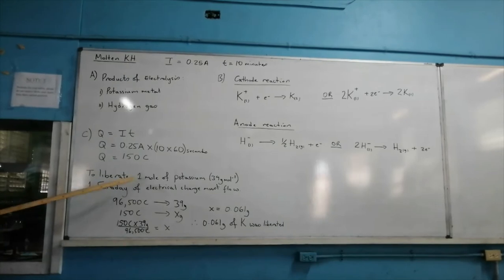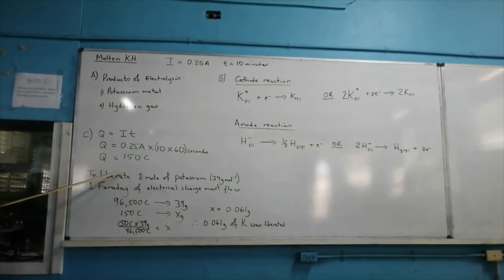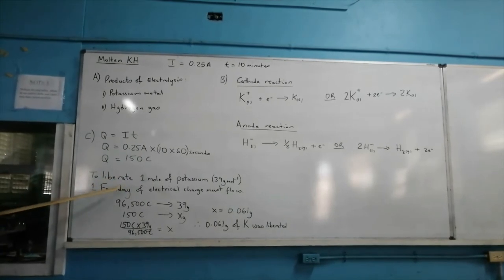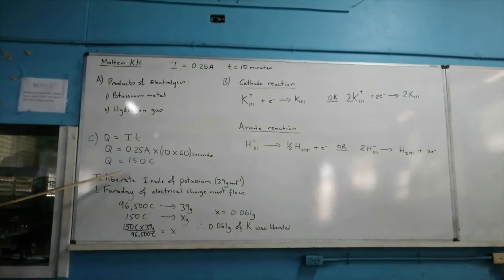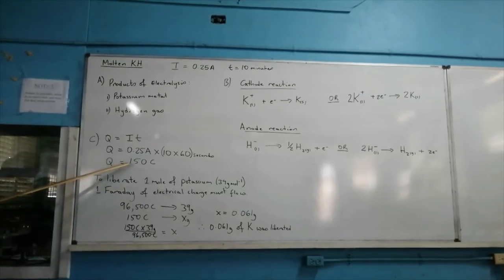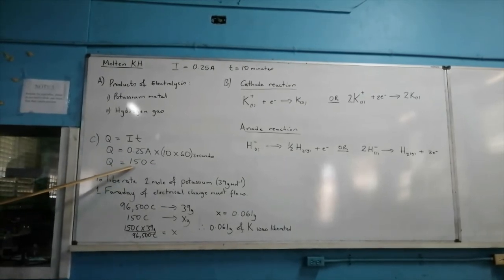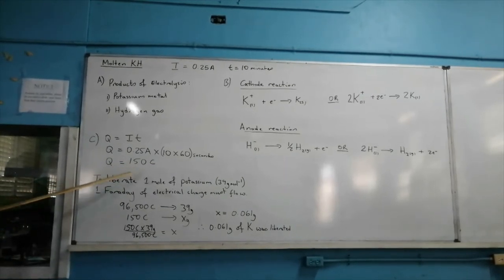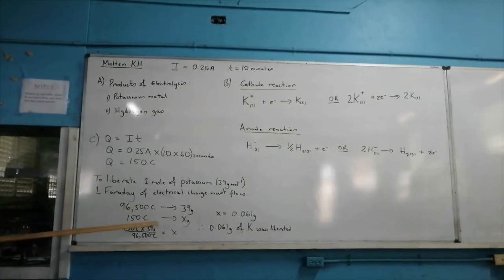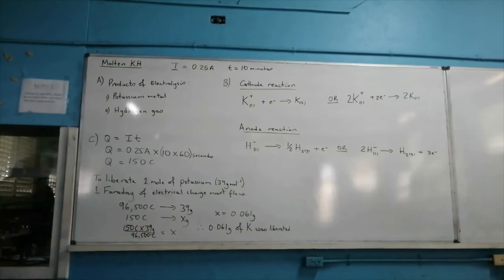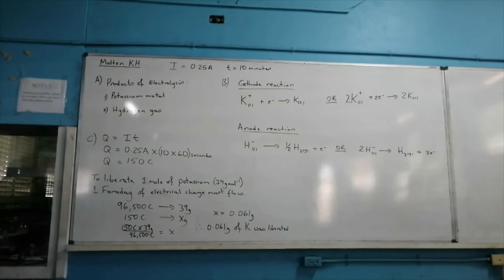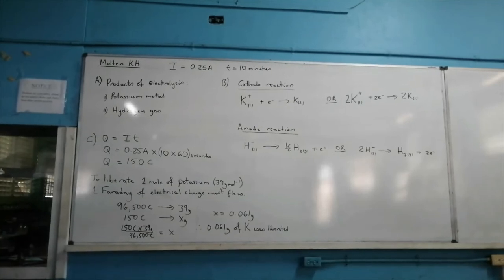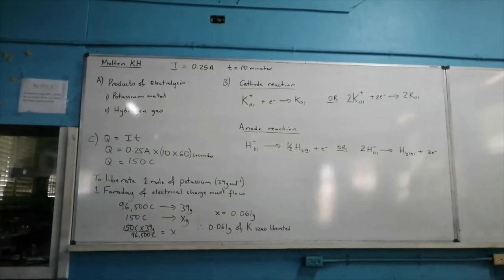To deposit 1 mole of potassium metal requires the passage of 1 Faraday of electrical charge. So if 150 coulombs of electrical charge flows through the circuit, then 0.061 moles of potassium was liberated. Go ahead, do the calculations for yourself to verify.